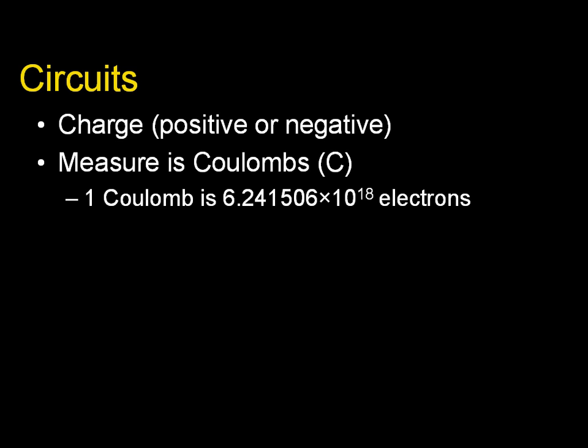To give you perspective, one coulomb is 6.24 times 10 to the 18th electrons. So a whole bunch of electrons equals one coulomb. Of course, it doesn't have to be electrons, it can be a positive charge also.